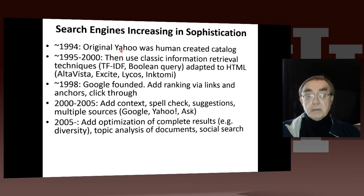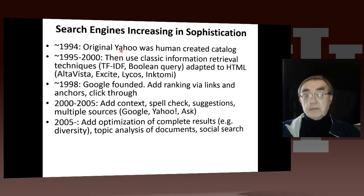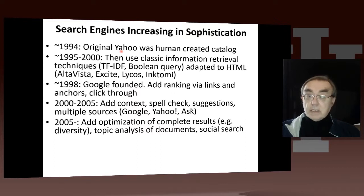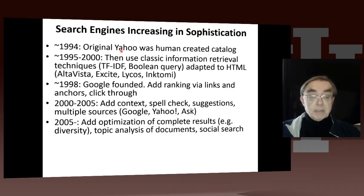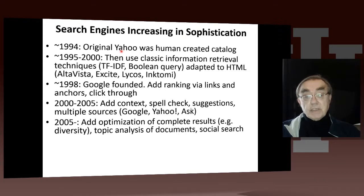Google introduced ranking using links, anchors, and click-through. Then after that, we added all sorts of interesting enhancements: spell checking suggestions, lots of sources. And there we have Ask, Yahoo, Google, and Bing. Then we added total optimizations so that the people who advertise made lots of money. Topic analysis — that's Google News — came in this next generation.